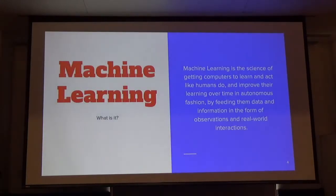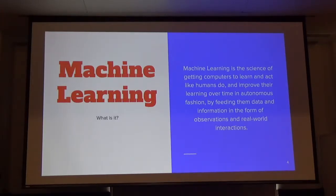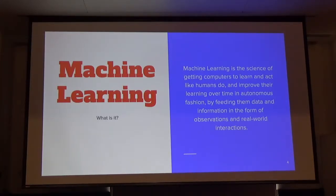So what is machine learning? Machine learning is the science of getting computers to learn and act like humans do, and improve their learning over time in an autonomous fashion by feeding them data and information in the form of observations of the real world. Essentially, we want to train a computer to do all the boring stuff so that we can get to the interesting stuff.